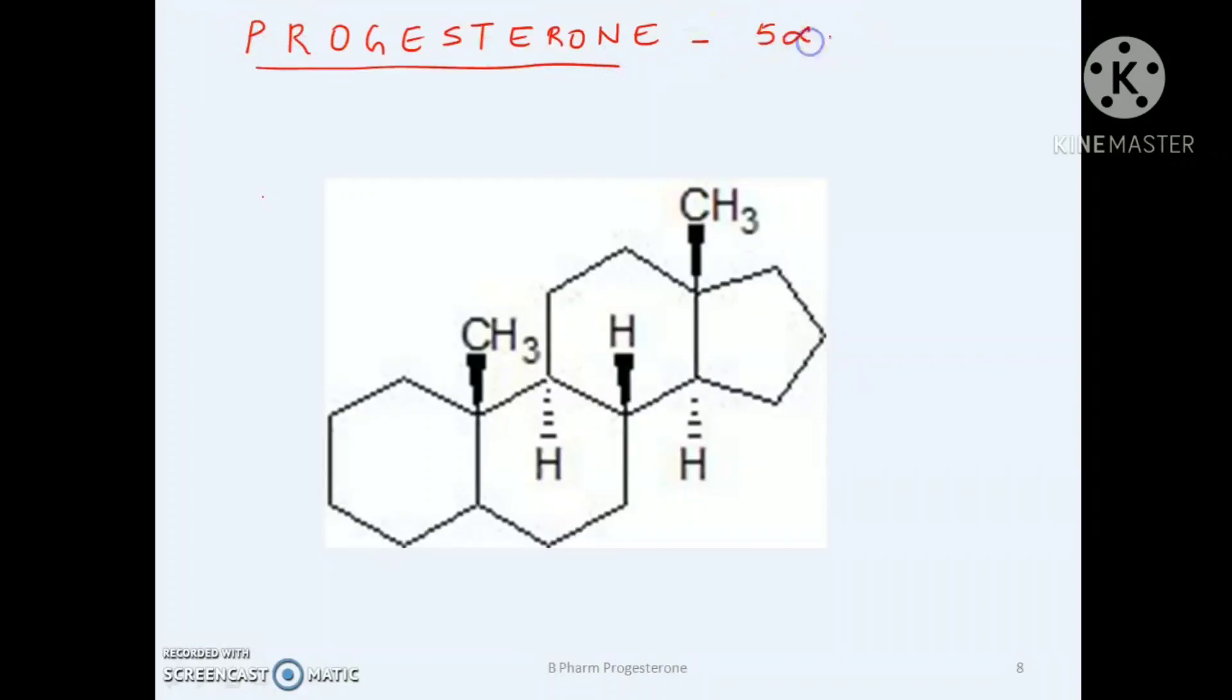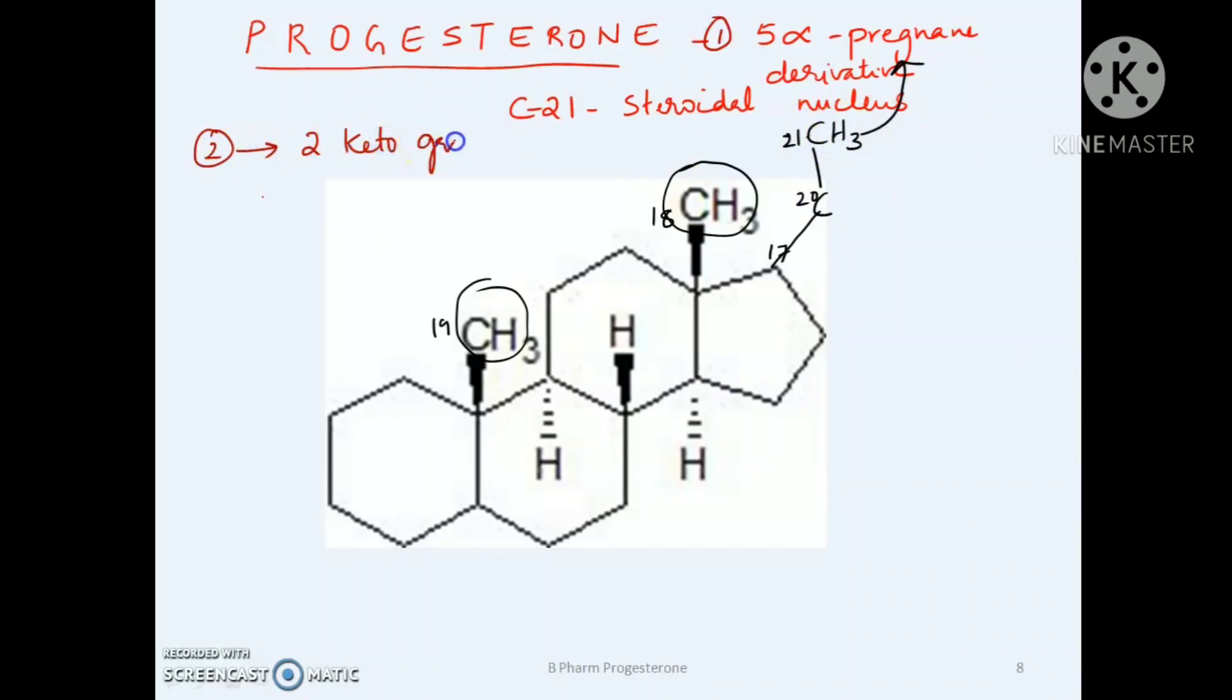Next is the chemistry of progesterone. Progesterone belongs to pregnen series, 5-alpha pregnen. It contains 21 carbon steroidal nucleus, meaning it contains methyl group at C10 and C13 and a 2-carbon side chain at C17. The second structural feature is that it contains two keto groups, one at the third position and the other at the 20th position.